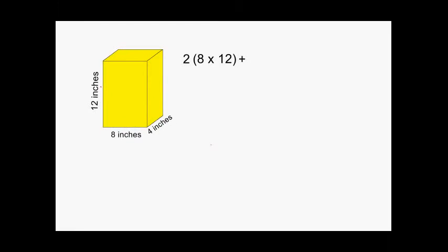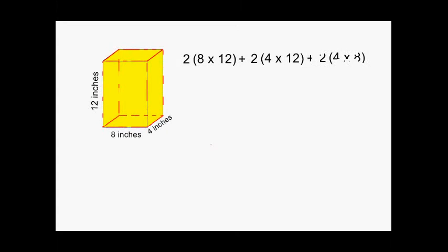Next, the dimensions of the right surface are four by 12. Because the left surface is identical to the right, we write 2 times (4 × 12). The top surface has dimensions of four by eight, and the bottom surface is also four by eight, so we write 2 times (4 × 8).